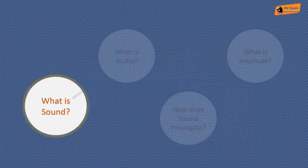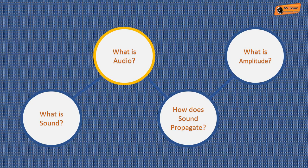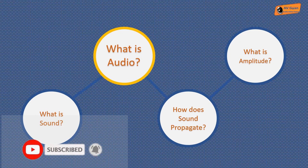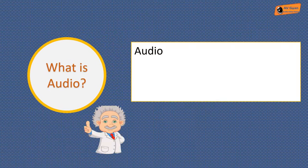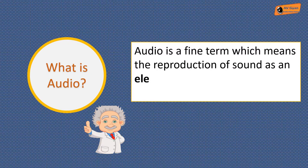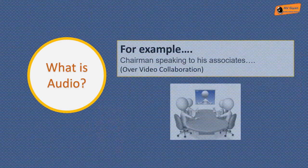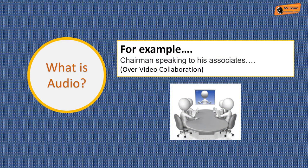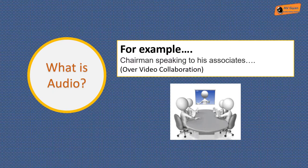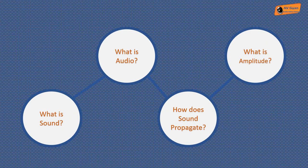Now let's see what is audio. To be frank, audio is a fine term which means the reproduction of sound as an electrical signal coming from a recording or electronic device. In layman's language, all types of sound are not audio. Audio are only those parts of sound which are regenerated through an electrical signal or electronic device. Now take the same chairman speaking to his associate but this time it's over a video collaboration system — a video conferencing happening between the chairman and his associate. In this example, you will never know the difference, but the audio is not coming to you directly from the chairman's mouth; it is coming through an electronic circuit or electronic device.